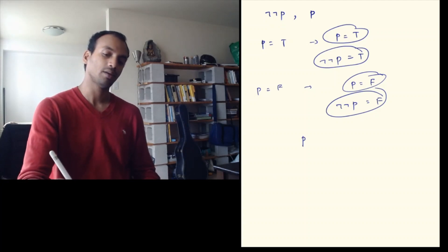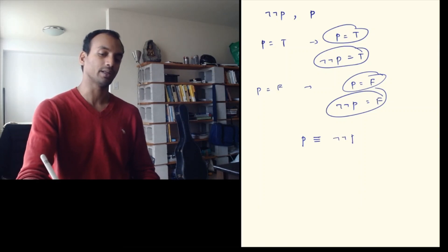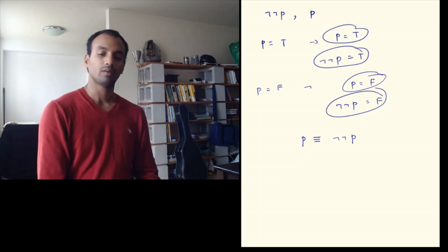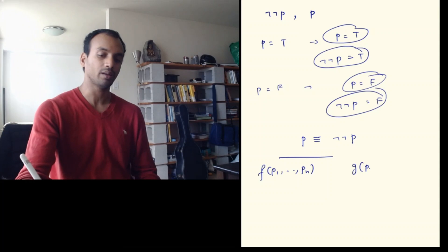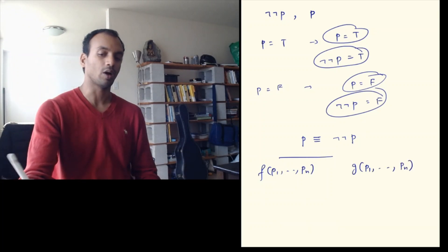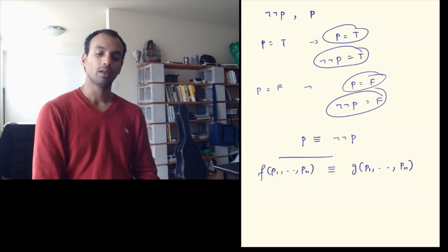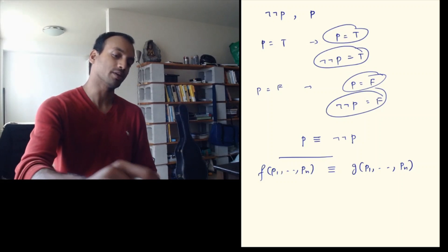We write this equivalence using three horizontal lines: p ≡ ¬¬p. In general, if f(p₁,...,pₙ) and g(p₁,...,pₙ) are two equivalent compound propositions, we write this with that same symbol. Let's look at more examples to get a feel for this.